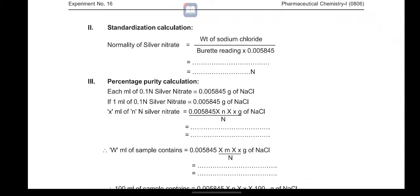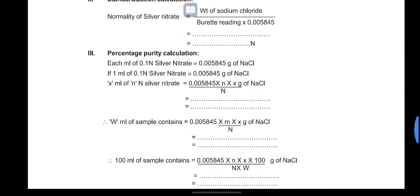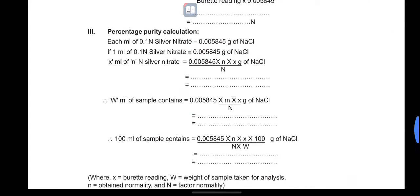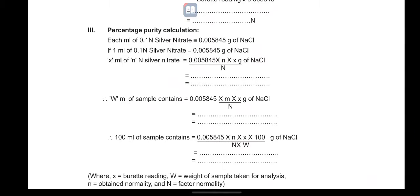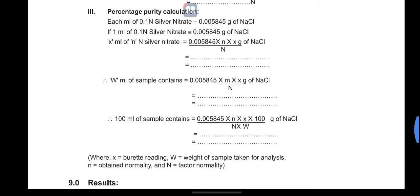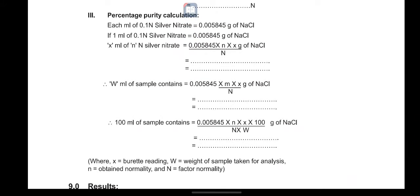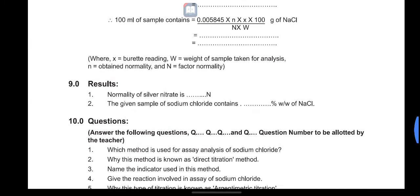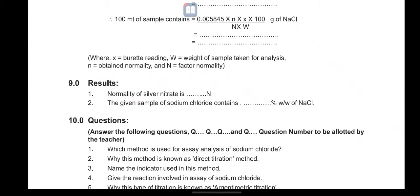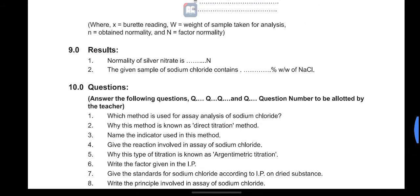For calculations: first calculate the normality of silver nitrate using the formula — weight of sodium chloride divided by burette reading multiplied by the factor 0.005845. Then calculate the percentage purity of sodium chloride using the normality obtained. Thank you.